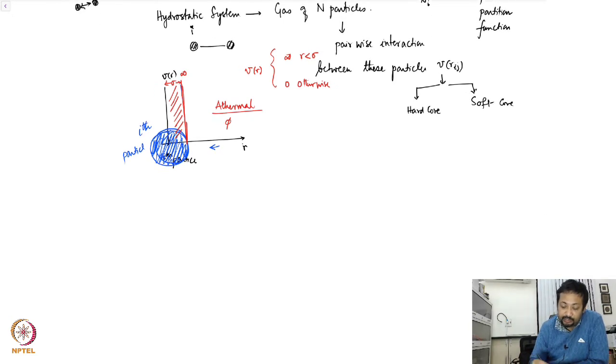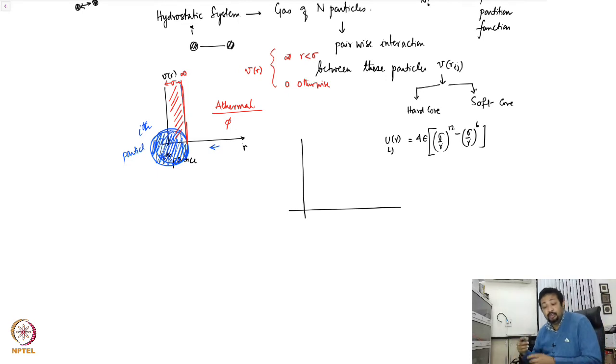Now the second type of interacting systems that people typically model are what are called soft core. For example one of them is what is called Lennard-Jones potential and that is sigma over r to the power 12 minus sigma over r to the power 6. There are various modifications they are also called m-n potential with this being m and the n being 2m. So this is the repulsive part and this is the attractive part. So the generalization can be this but these are all generalizations.